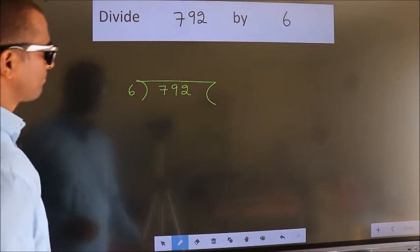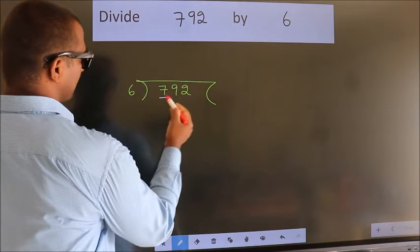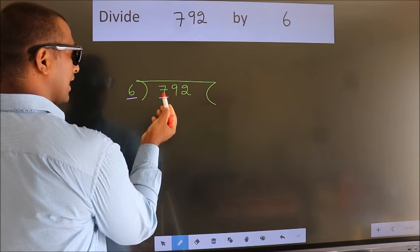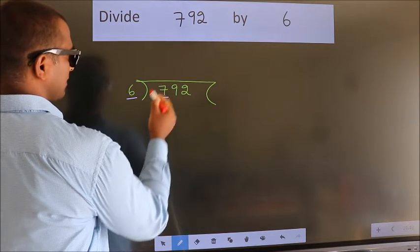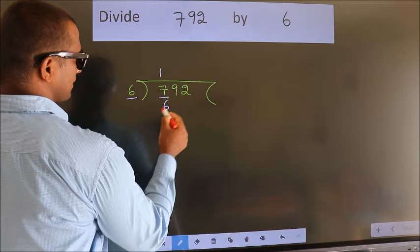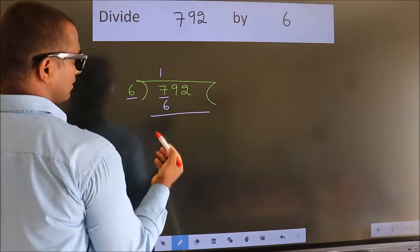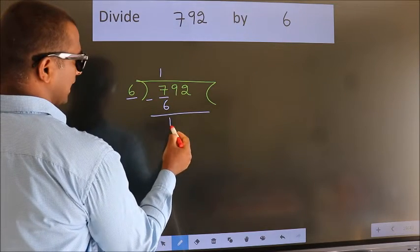Next. Here we have 7, here 6. A number close to 7 in 6 table is 6 once 6. Now we should subtract. We get 1.